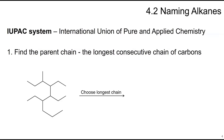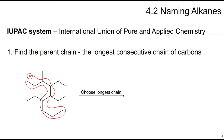The first rule in naming alkanes is to find the parent chain, which is the longest consecutive chain of carbons. In this example, if you look left to right you might count a six-carbon chain, but when you look more carefully the longest chain actually has nine carbons. So that is the parent chain, and there are branches coming off of it.